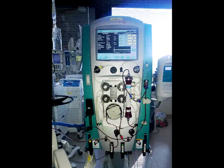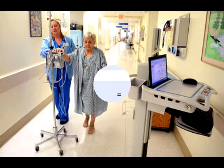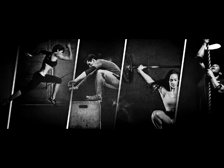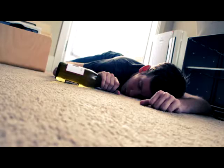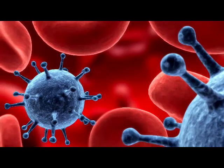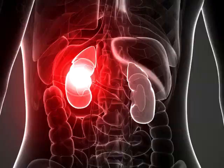In severe cases of rhabdomyolysis, patients may require dialysis. When appropriate, mobilising the patient and increasing activity aids towards recovery. In summary, rhabdomyolysis is a condition involving the breakdown of skeletal muscle that can be caused by trauma, strenuous exercise, prolonged immobility, toxins, infective processes, and metabolic disorders. Nurses are paramount in both the treatment and prevention of complications such as renal injury and compartment syndrome.